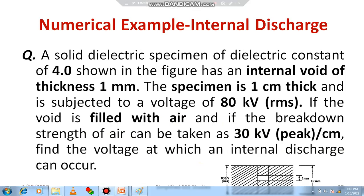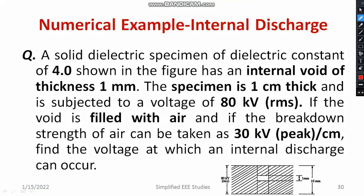Before that, let us read out the numerical example. Whenever you are going for insulation design or design of insulating material, you need to consider internal discharge. A solid dielectric specimen of dielectric constant 4, as shown in the figure — a rectangular piece of solid dielectric material — has a dielectric constant equal to 4. The internal void has a thickness of 1 mm, and the specimen is 10 mm thick, subjected to a voltage of 80 kV RMS.